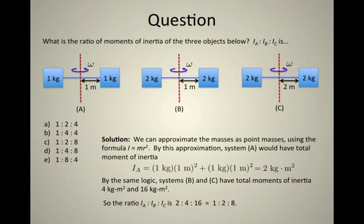So the ratio of these A to B to C is 2 to 4 to 16 or 1 to 2 to 8 and so the correct answer amongst our five choices is answer C.